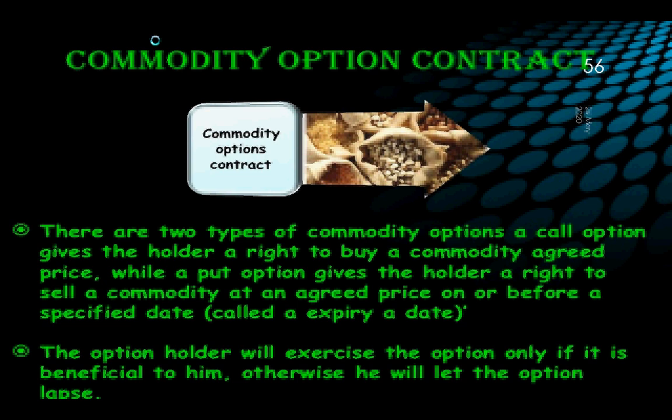The option holder will exercise the option only if it is beneficial to him; otherwise, he will let the option lapse. There are two types of options: call option and put option. When the buyer has the option to buy a commodity at an agreed price, he has the right to buy at a predetermined future price. The put option gives the holder the right to sell the commodity at an agreed price on or before the expiry date.